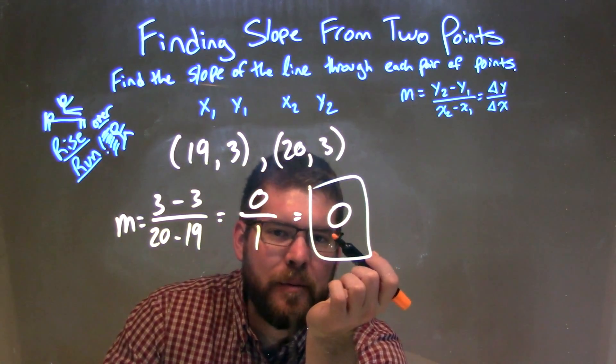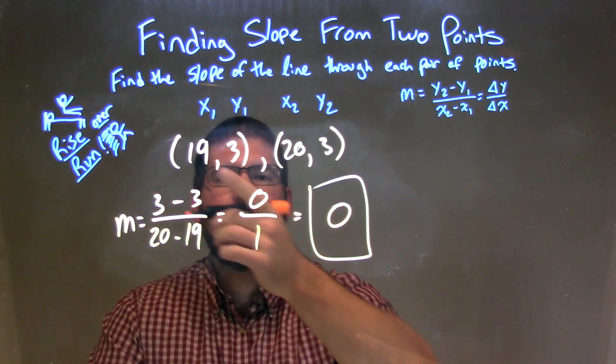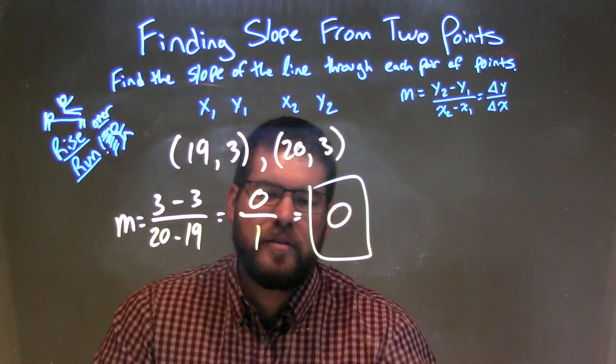Be careful about dividing by 0. 0 is linear. So our final answer here, our final slope between these two points, is just 0.